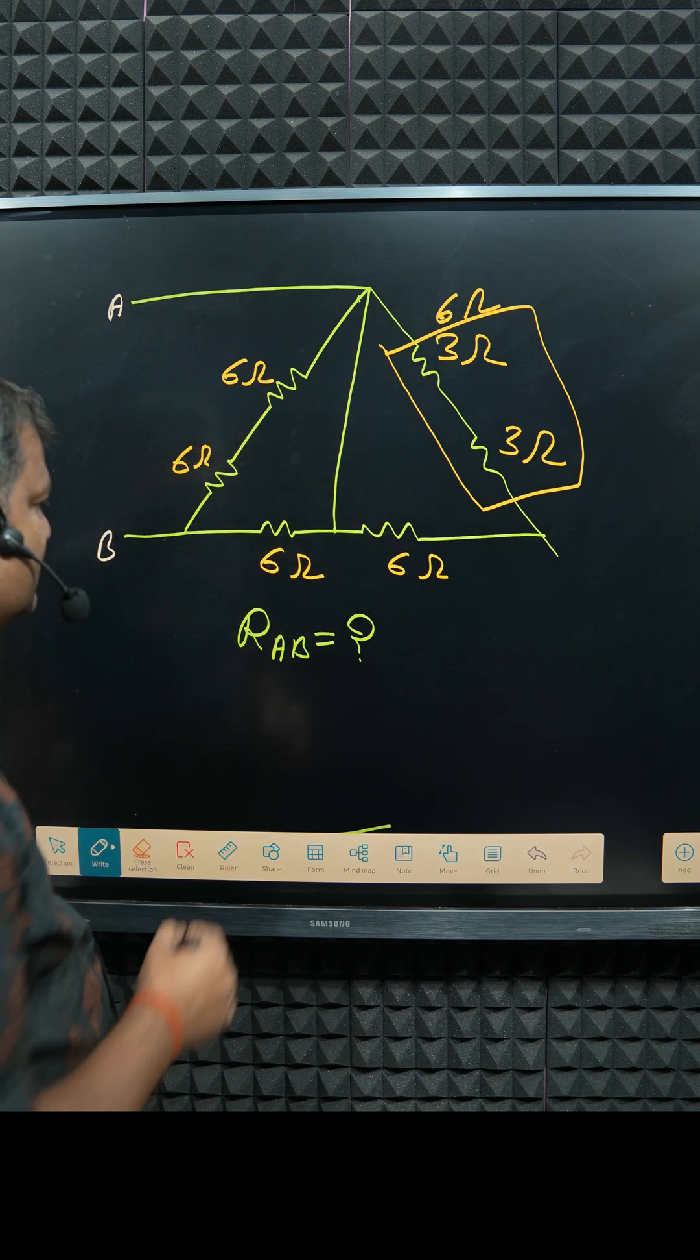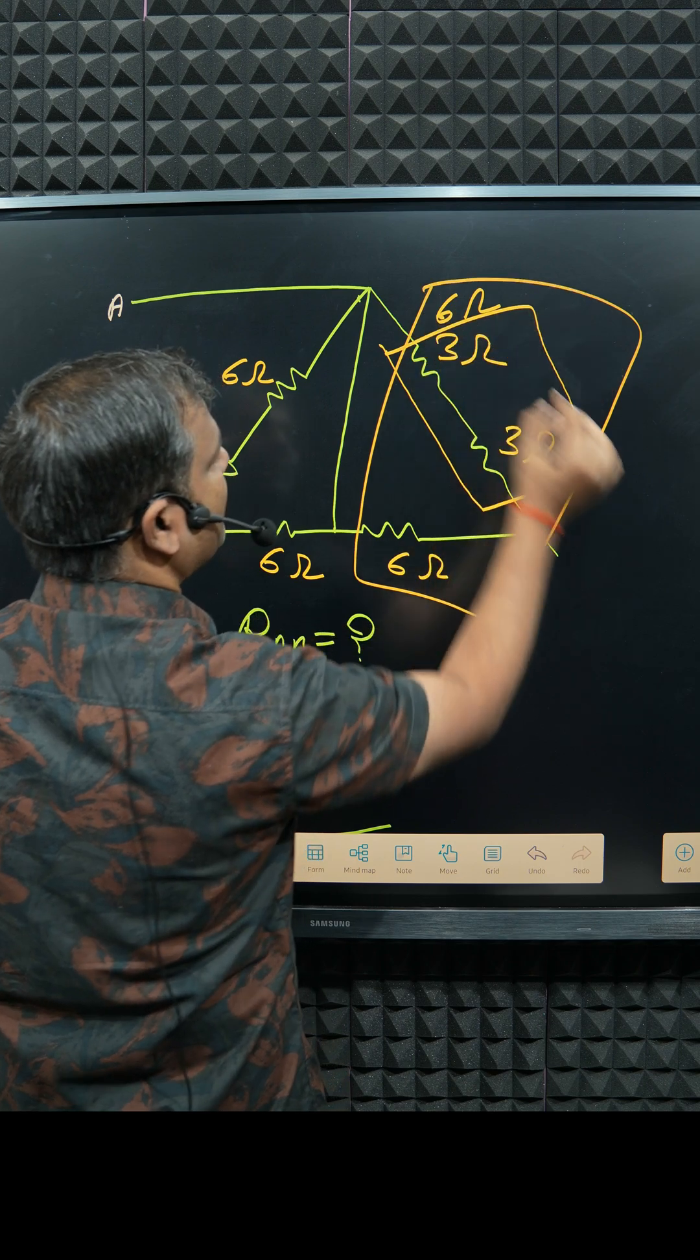6 and 6, that is 12. So simply both are in series, so you can see that is 12 ohm.